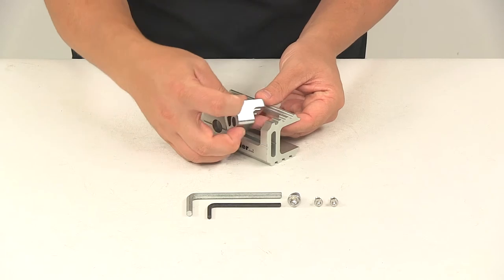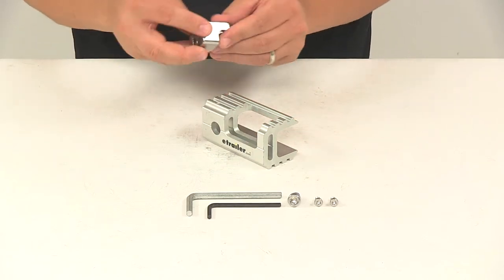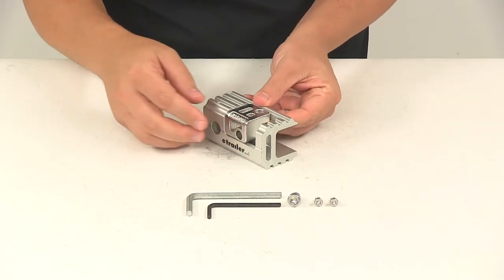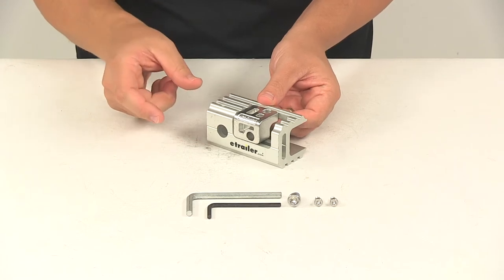This is the configuration of how the unit would install on the shank of the rack. It gets placed on there. Now all the holes are going to line up perfectly with the holes on the shank.